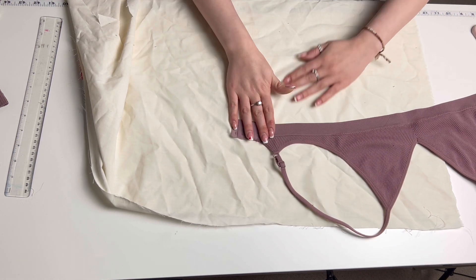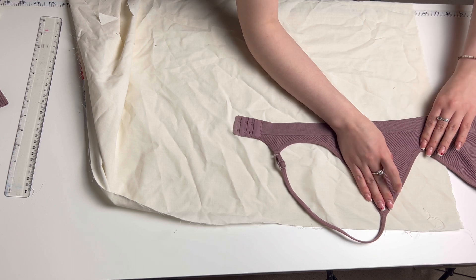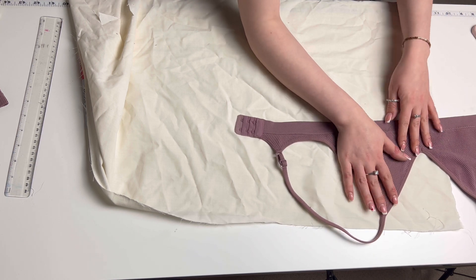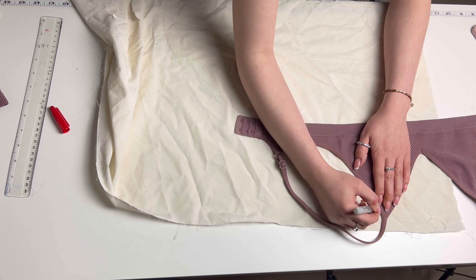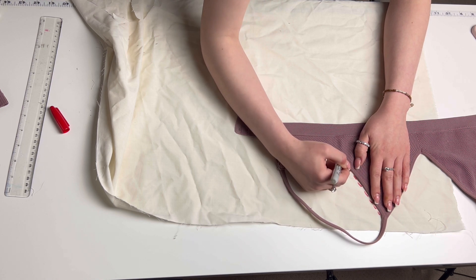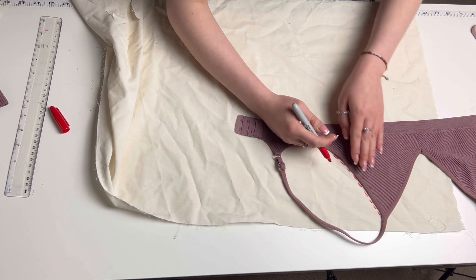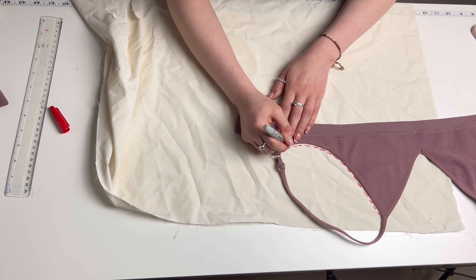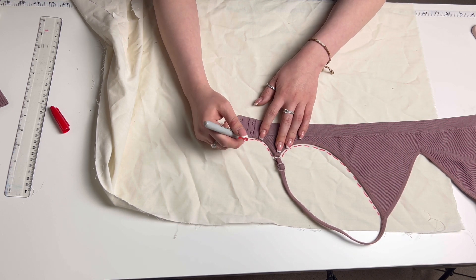Starting with the bralette, lay half of your bralette down onto a scrap piece of fabric. Once your bralette is lying nice and flat, you want to take a marker pen and slowly start tracing round. Remember we're only making the pattern for half of the bralette, as when we cut it out on our proper fabric we'll be cutting it out on a fold.